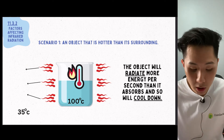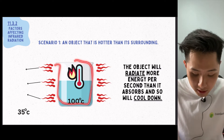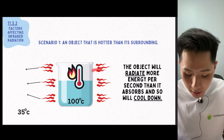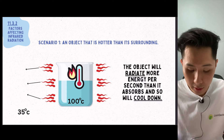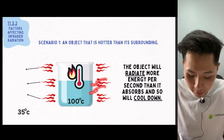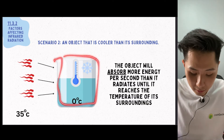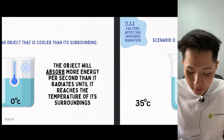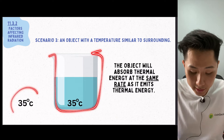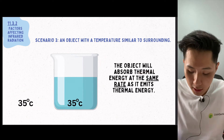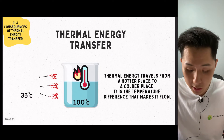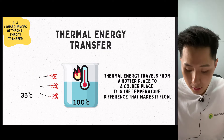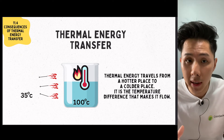Here are some factors that affect how much radiation occurs. Imagine a beaker containing boiling water placed in a room that is 35 degrees Celsius. Because the beaker has a higher temperature than its surrounding, the beaker will radiate more energy per second than it absorbs. Another scenario: if ice is put into the beaker, the ice will absorb more radiation than it emits. And if a beaker is at the same temperature as the surrounding, it absorbs thermal energy at the same rate it emits, meaning there will be no temperature changes.